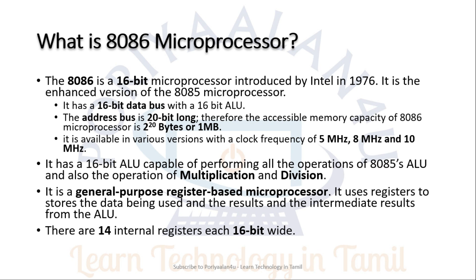Another advantage is that 8085 supports only basic arithmetic operations — addition, subtraction, and logical operations. But in 8086, apart from addition and subtraction, you can also do multiplication and division. Additionally, 8085 is accumulator-based, while 8086 is general-purpose register-based. There are 14 16-bit registers in 8086, whereas 8085 has only 6 8-bit registers.